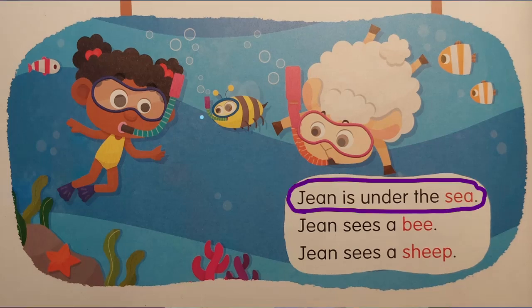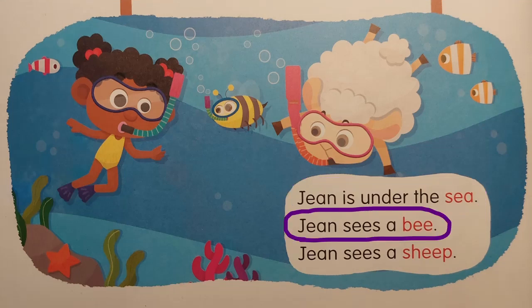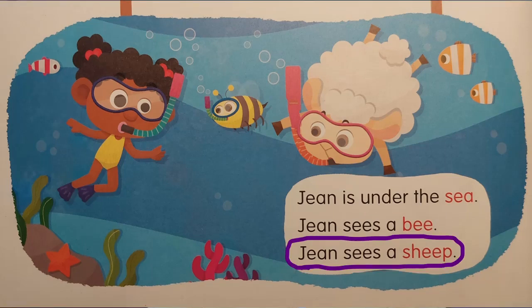Very good. Jean is the name of the girl — J-E-A-N. Now let's look at the second picture and see what Jean is doing. Jean is under the sea. Jean is under the sea. Jean sees a bee. Jean sees a bee. Jean sees a sheep. Very good — a little crazy: a sheep under the sea, a bee under the sea, with goggles, looking at the fish!